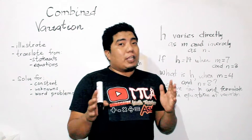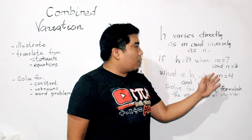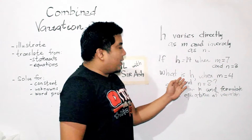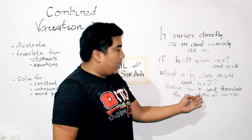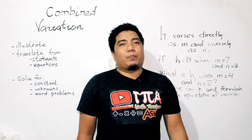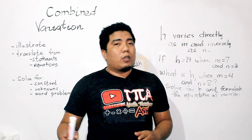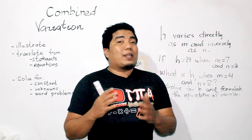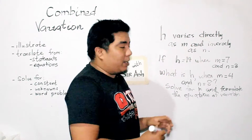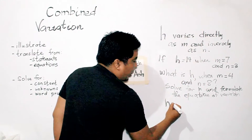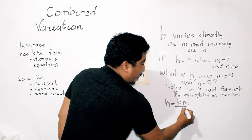We have an example on how to solve combined variations: H varies directly as M and inversely as N. If H is 14 when M equals 7 and N equals 3, what is H when M equals 4 and N equals 8? Solve for K and formulate the equation of variation. First, we translate the statement: H varies directly as M and inversely as N, so we write H = KM over N.